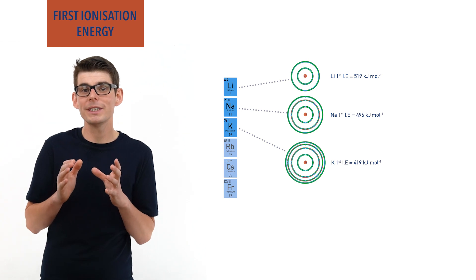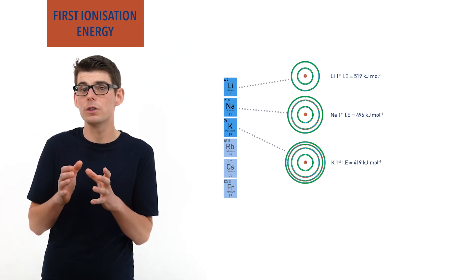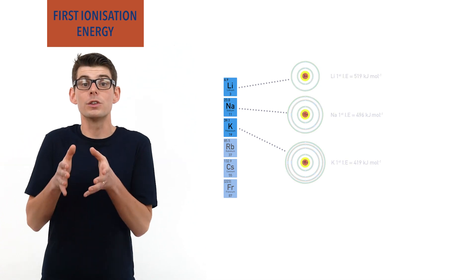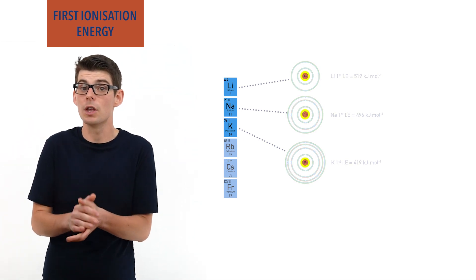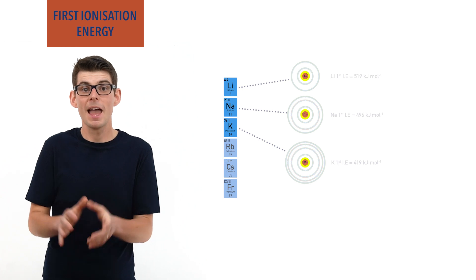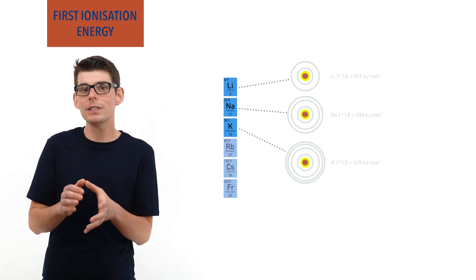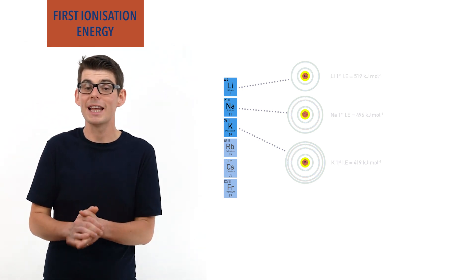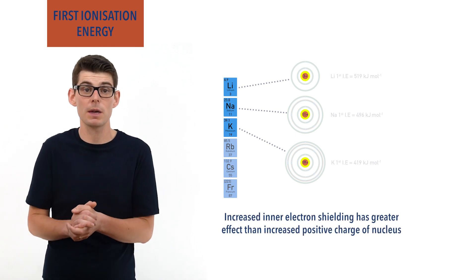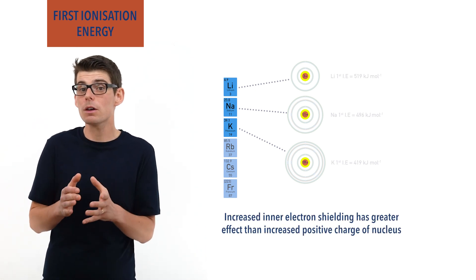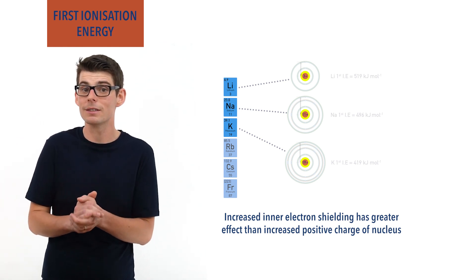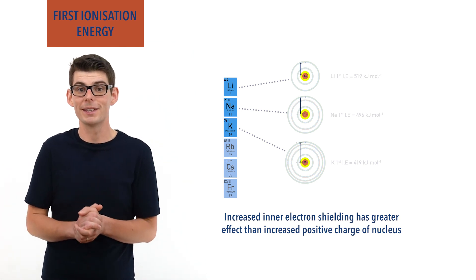It is important to point out that the positive charge of the nucleus does also increase down a group, which does cause greater attraction between electrons in the atom and the atom's nucleus. However, the increased level of inner electron shielding has a bigger effect on the attraction the outer electrons experience, meaning the increased positive charge of the nucleus is offset by the increased distance the outer electrons are from it.